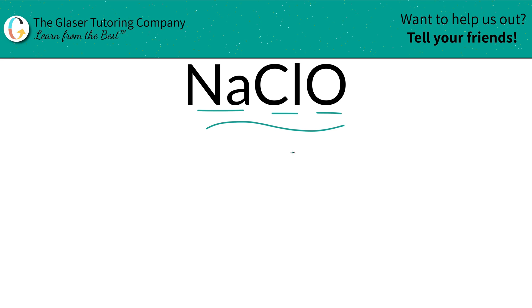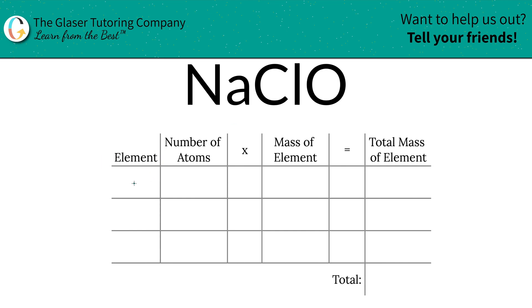To do this, we're going to find the mass first, and then we're going to find those percentages. Take a look at this table. So the first thing is we're going to write the elements we see. We've got sodium, chlorine, and oxygen.